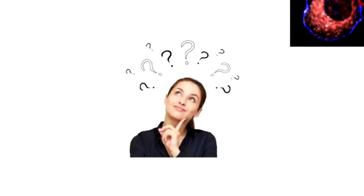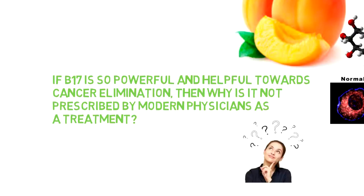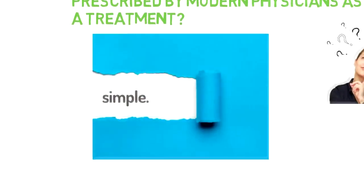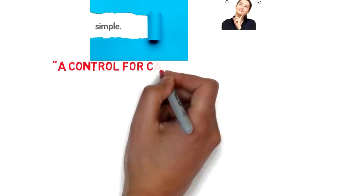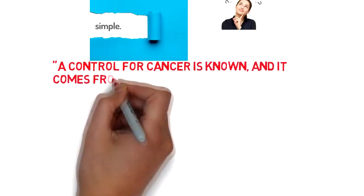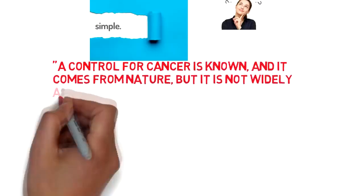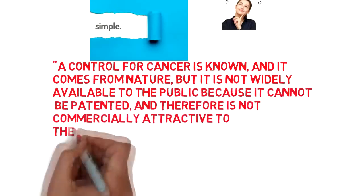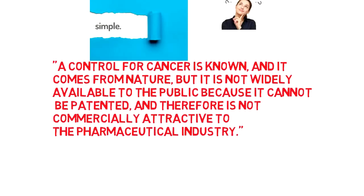You may be asking the following question: If B17 is so powerful and helpful towards cancer elimination, then why is it not prescribed by modern physicians as a treatment? Simple answer. A control for cancer is known, and it comes from nature, but it is not widely available to the public because it cannot be patented, and therefore is not commercially attractive to the pharmaceutical industry.